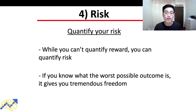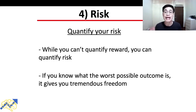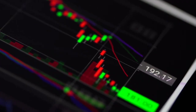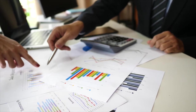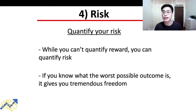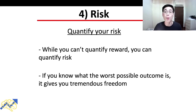The second point is to quantify our risk. While we can't quantify our rewards — we never know exactly how much a stock can go up — we can quantify our risk. One way to do this is by using stop losses when entering the markets. By using stop losses, we determine an exit point where we exit our position automatically. By setting stop losses, we are able to quantify our risk and know the worst possible outcome, which gives us tremendous freedom.